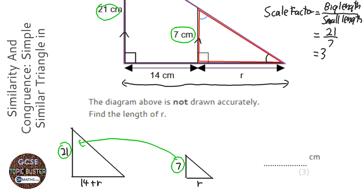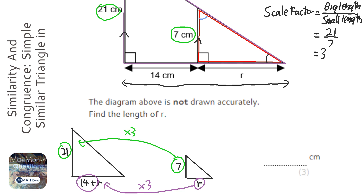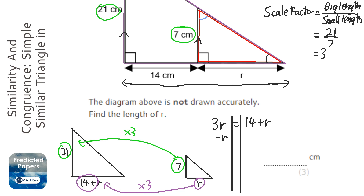That means we multiply everything by 3 — we multiply r by 3 to get the larger corresponding length. This is where it gets a bit more involved: the larger length is 3r, because we times r by 3 to get it, but we also know it is 14 plus r. This gives us an equation to solve, so we take away r from both sides.